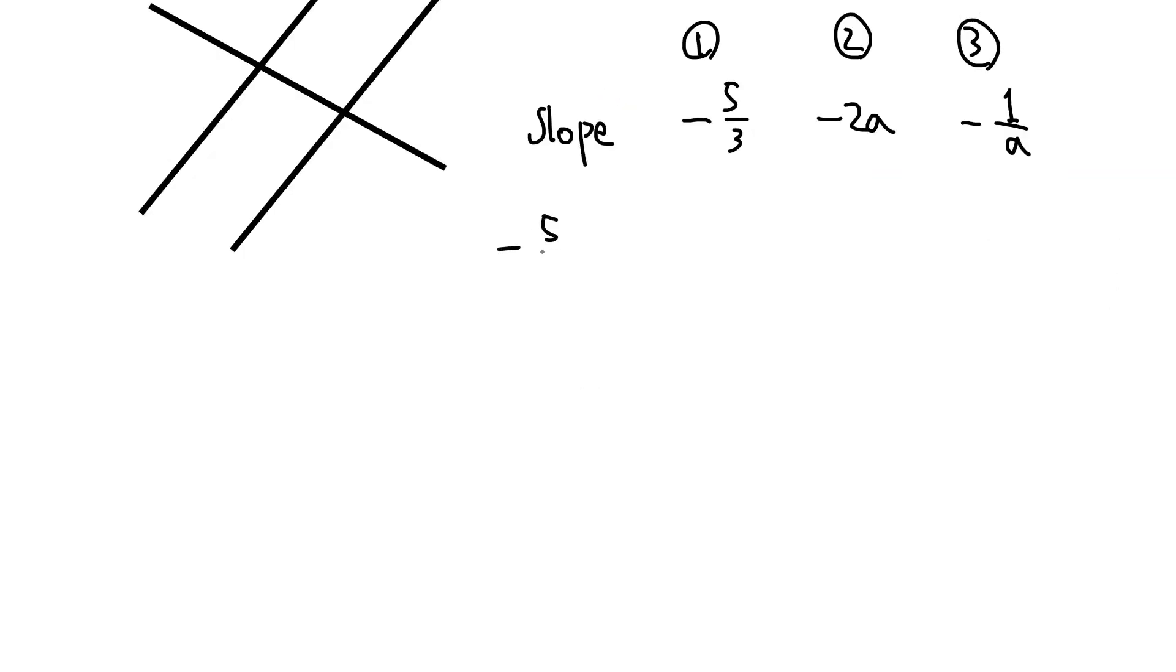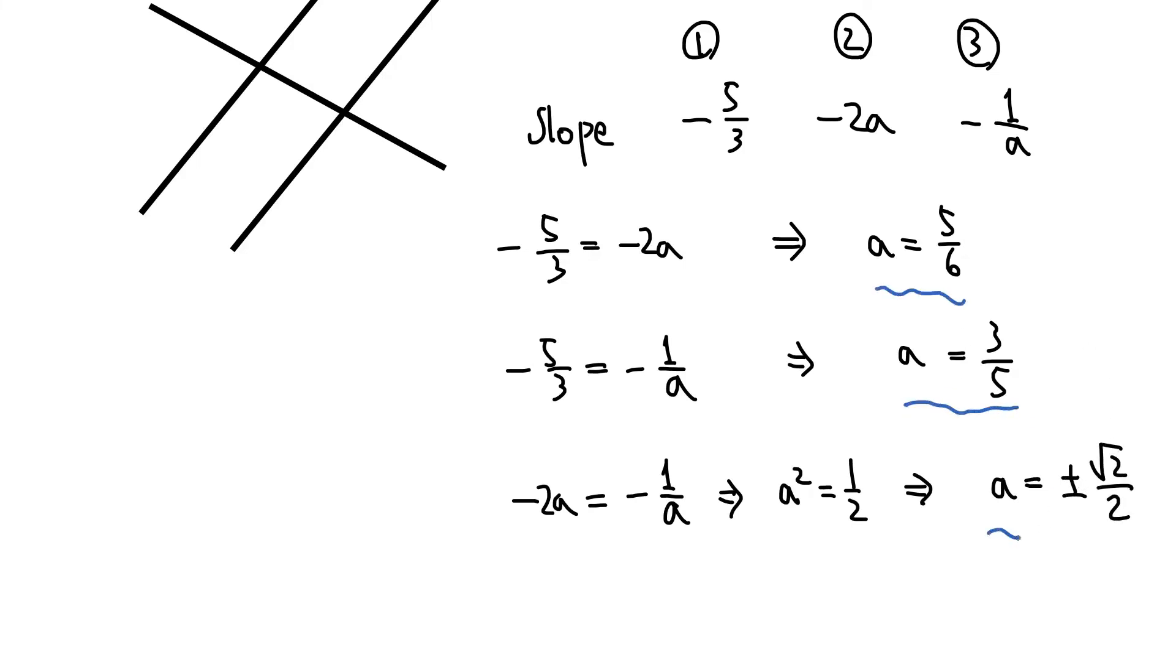So the first one is where minus 5 over 3 equals minus 2A, then A equals 5 over 6. The second possibility is where minus 5 over 3 equals minus 1 over A. Then A equals 3 over 5. And of course, the third one is where minus 2A equals minus 1 over A. In that case, we have A squared equals 1 over 2. So we have A equals plus minus square root of 2 over 2. So we have found four possible values of A in this case.